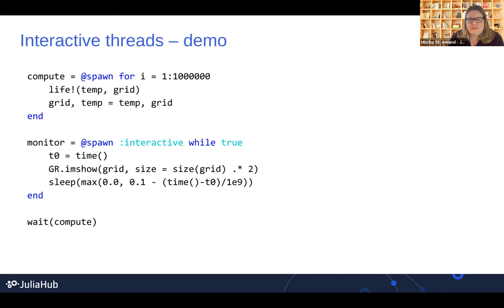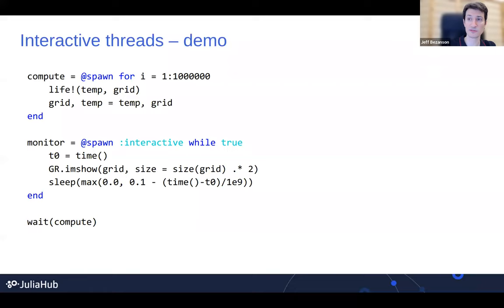Is there a way to see the number of interactive threads during runtime to be able to toggle the interactive stuff? Yes, you can get the number. You can query for the number of threads and the number of thread pools — there are functions for that.